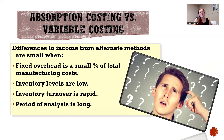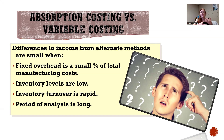If fixed overhead is a small percentage, or if your inventory levels are low, you would have expensed out the majority anyway through cost of goods sold because you've sold most of it. If you turn over inventory very quickly, or if you look at this over a really long period of time, the differences would even out. Remember, all product costs under either method are expensed out each time you sell a product under cost of goods sold.